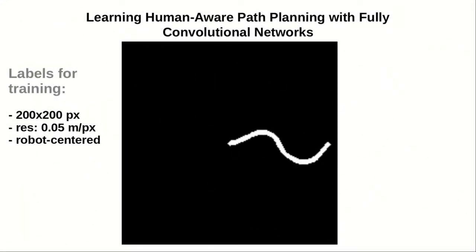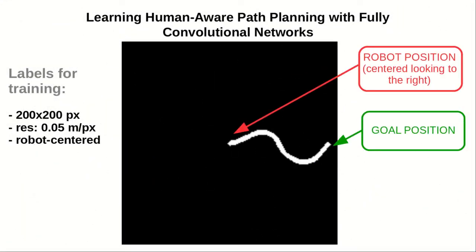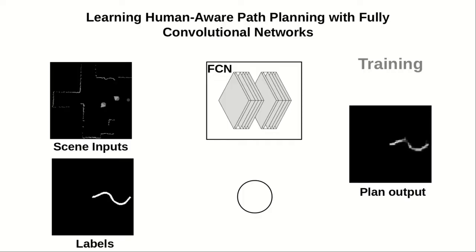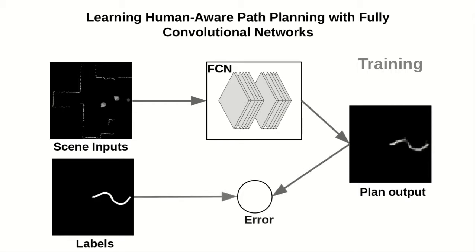As labels for training the network, we employ images with the demonstrated social paths to the goals. The training process uses the demonstrated paths to compare with the network output. The error between the two images is employed to update the network parameters for each training step.